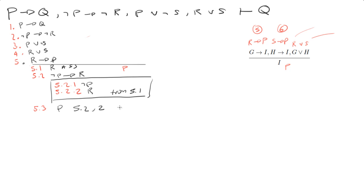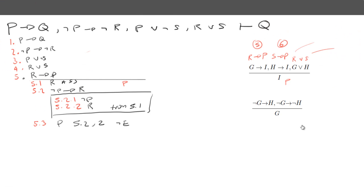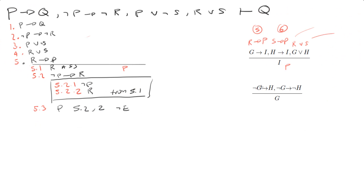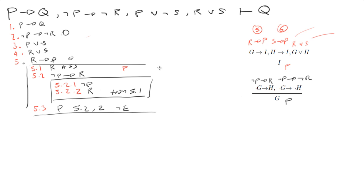Let me show you the rule I used: I can say not P implies R (from the subproof), then not P implies not R (from the data in line 2), and then I can say P. So this bit is done — I've got P out.